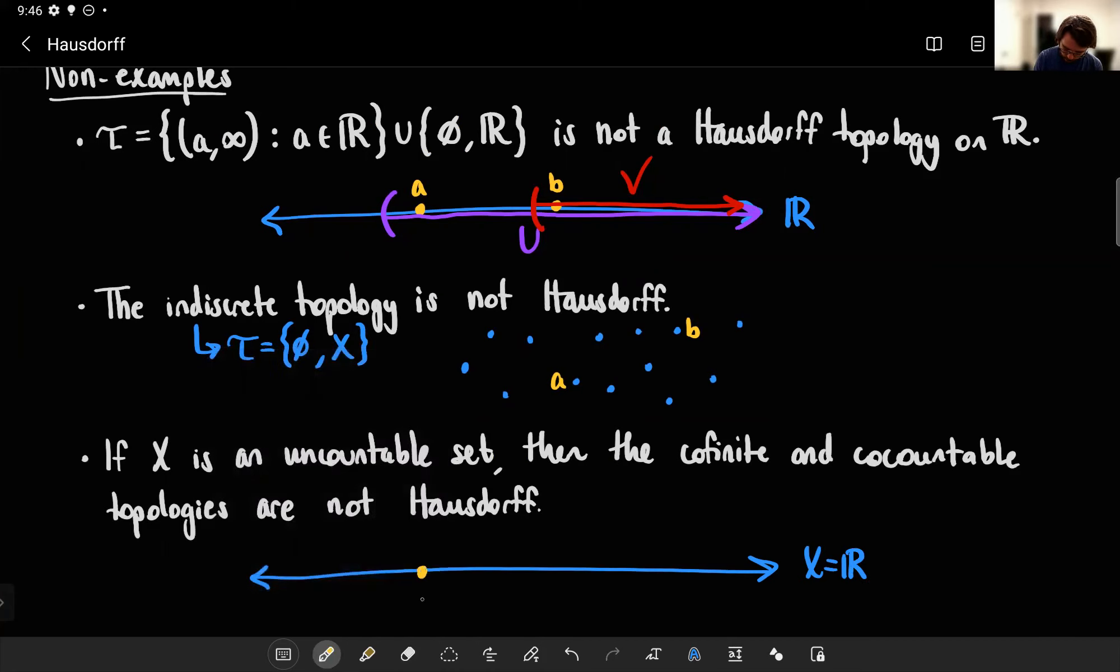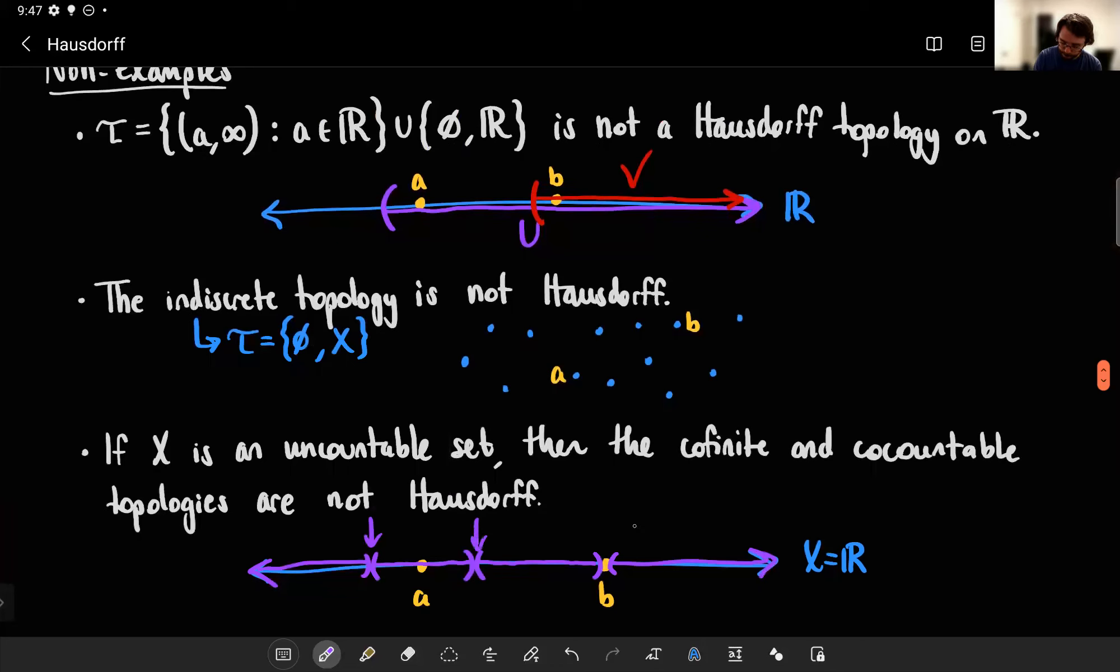And sure enough, if you were to take, let's say we're working in R or something. So X equals R. Again, we'll pick some random points A and B distinct from one another. Then if I were to take some co-finite set containing A. Remember, co-finite means its complement is finite, so it has to be almost everything. Maybe it has like a tiny gap here and a tiny gap here. And maybe it misses B. So its complement is finite because it's missing three points, say.